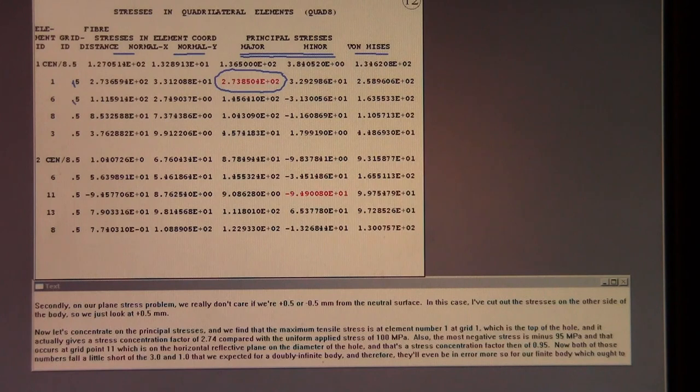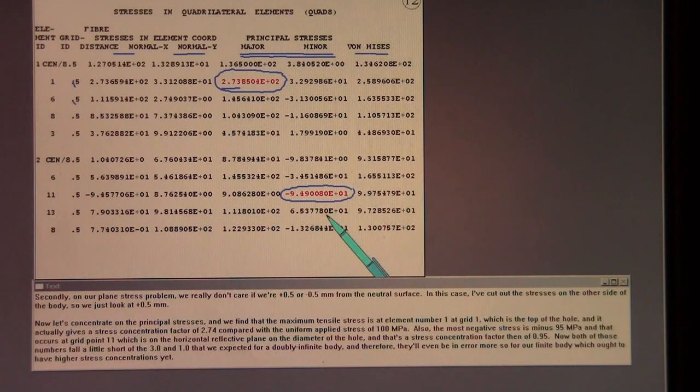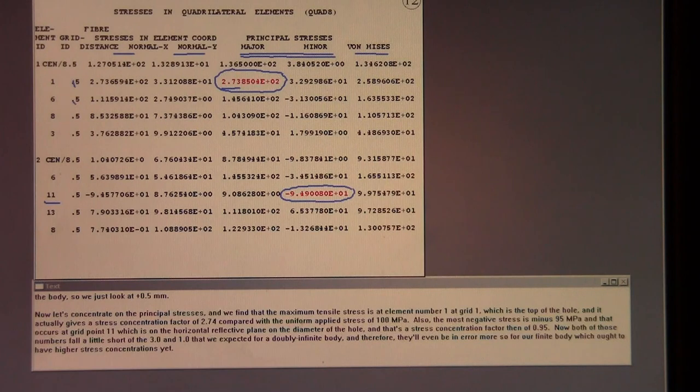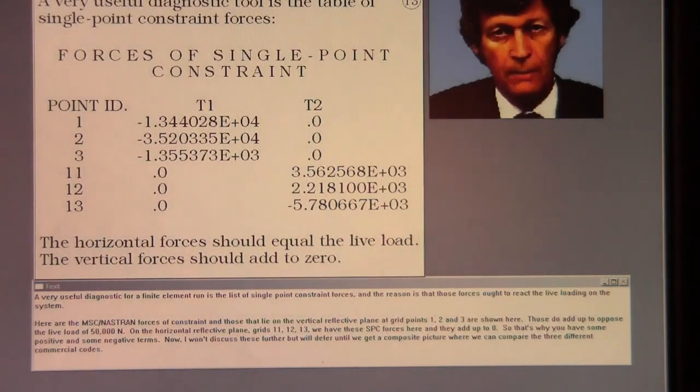Now let's concentrate on the principal stresses. And we find that the maximum tensile stress is at element number one at grid one, which is the top of the hole. And it actually gives a stress concentration factor of 2.74 compared with the uniform applied stress of 100 megapascals. Also the most negative stress is minus 95 megapascals. And that occurs at grid point 11, which is on the horizontal reflective plane on the diameter of the hole. And that's a stress concentration factor then of 0.95. Now both of those numbers fall a little short of the 3 and 1 that we expected for a doubly infinite body. And therefore they'll even be in error more so for our finite body, which ought to have higher stress concentrations yet.